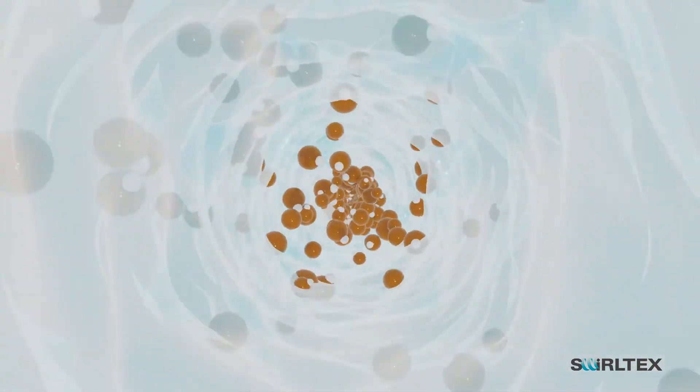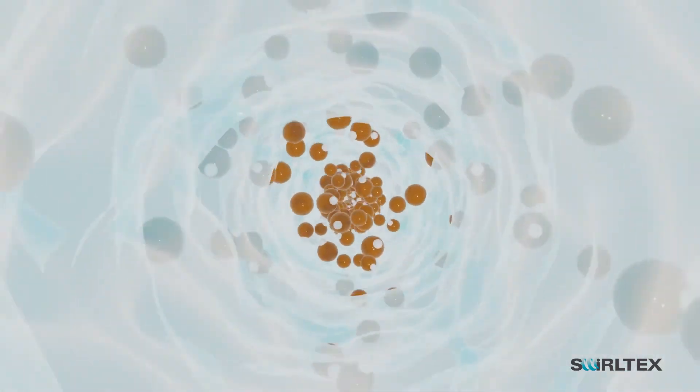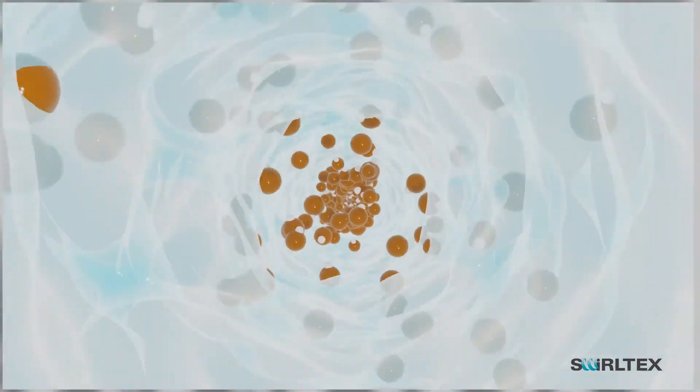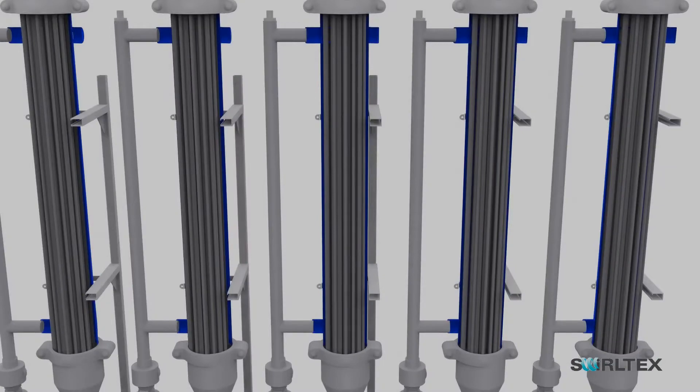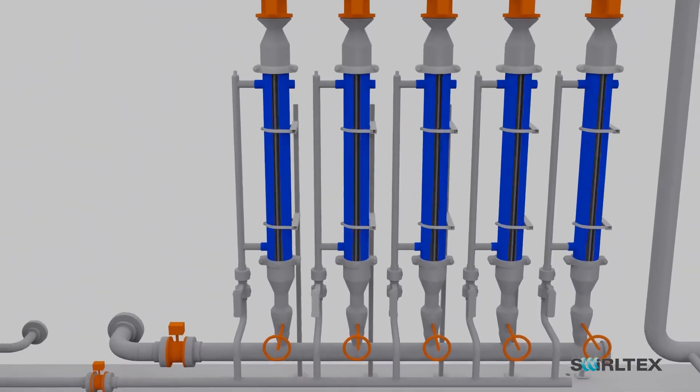Therefore, increasing flux and reducing fouling, a well-known limitation of membranes. High-quality, consistent water is produced with this membrane process.